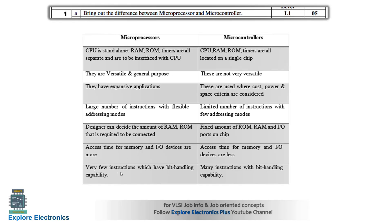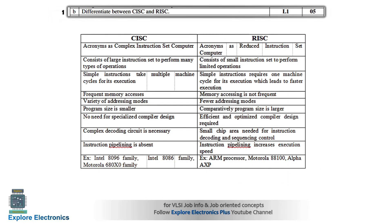There are very few instructions with bit-handling capability in a microprocessor, but in microcontrollers we can have many instructions with bit-handling capability. These are the main differences between µP and µC. It can be asked for five, six, or seven marks depending on the question.